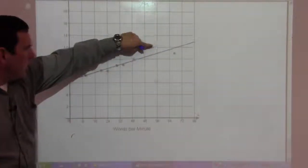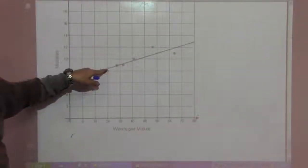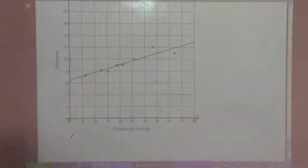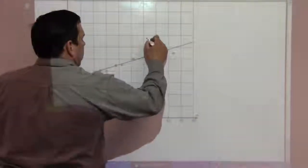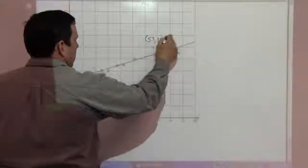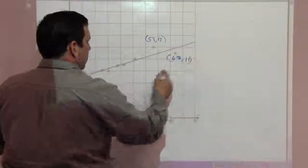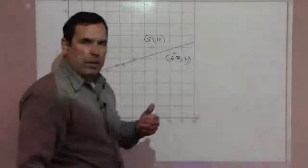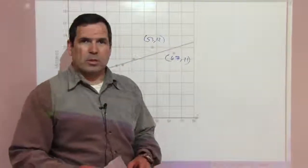This person had a higher number of words per minute and a higher number of mistakes. Here's someone with greater words per minute but fewer mistakes — being below the line is actually a good thing. Being above the line means too many mistakes. This is the person at 53 words per minute with 12 mistakes, and here is the person at 67 words per minute with 11 mistakes. And that'll do it for 13.7 and chapter 13. Do the homework and send me your questions. Thank you, have a good day.